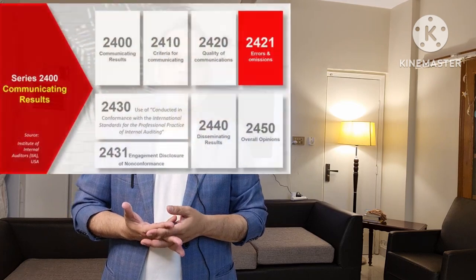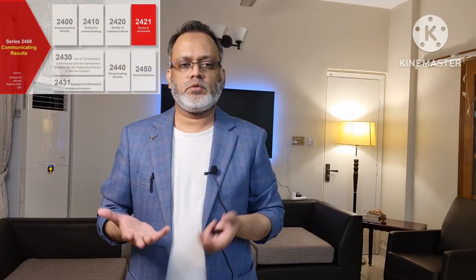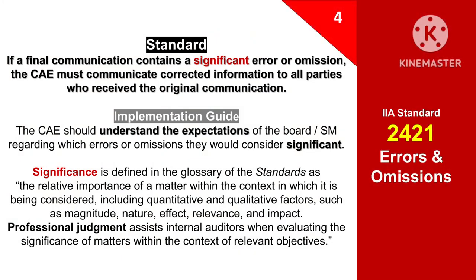Standard 2421 is regarding errors and omissions. The basic requirement of this standard is that if a final communication contains a significant error or omission, the Chief Audit Executive must communicate corrected information to all parties who received the original communication. As per the implementation guide of standard 2421, the Chief Audit Executive should understand the expectations of the board and senior management regarding which errors or omissions they would consider significant. Significance is defined in the glossary as the relative importance of a matter within the context in which it is being considered, including quantitative and qualitative factors such as magnitude, nature, effect, relevance and impact.